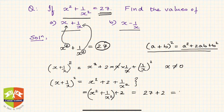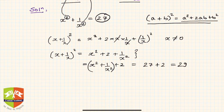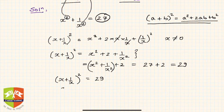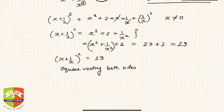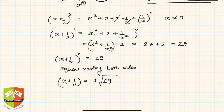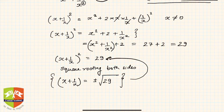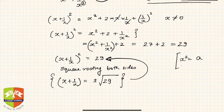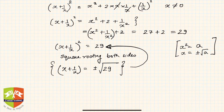So the total is 27 plus 2, which equals 29. We observe that x plus 1 upon x, whole squared, is 29. Square rooting both sides, x plus 1 upon x equals plus or minus square root of 29. We use plus and minus because both plus root 29 and minus root 29, when squared, give back 29. So whenever x squared equals a, then x equals plus or minus root of a.